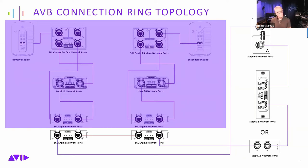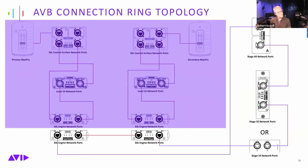Once the complete loop is established, you can lose any one connection and still be operating. The key is to treat them as two separate network loops — your console loops and your stage rack loops — then it becomes easy to design the system.